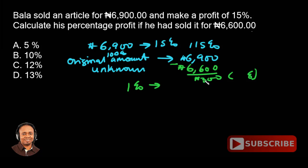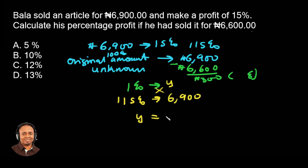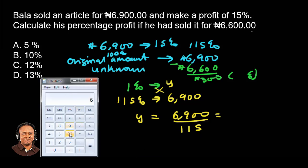Am I making any sense? So let us get more practical. If 1% gives us an unknown amount X, and 115% gives us 6900 Naira, we cross-multiply, so we're going to have X equals 6900 divided by 115. Using our calculator: 6900 divided by 115 gives us 60.